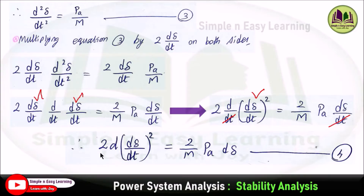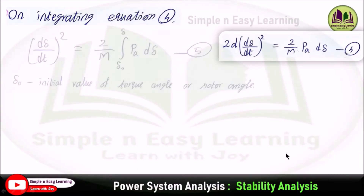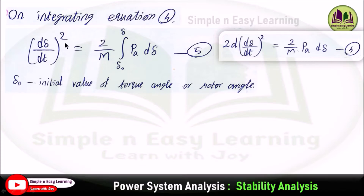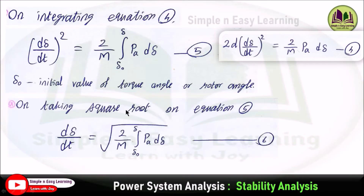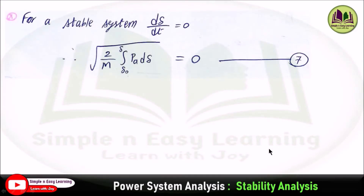Integrating the fourth equation, the differentiation cancels and you get (dδ/dt)² = (2/M) · ∫[δ₀ to δ] Pa dδ, where δ₀ is the initial value of the torque angle — this is the fifth equation. Taking the square root of equation 5, (dδ/dt) = √[(2/M) · ∫[δ₀ to δ] Pa dδ], and this is the sixth equation.